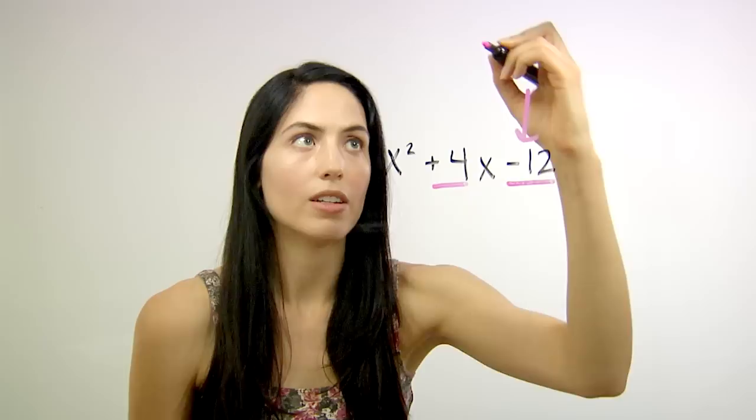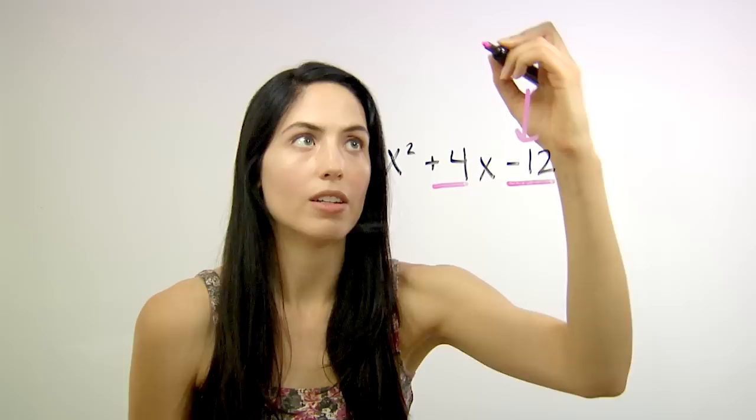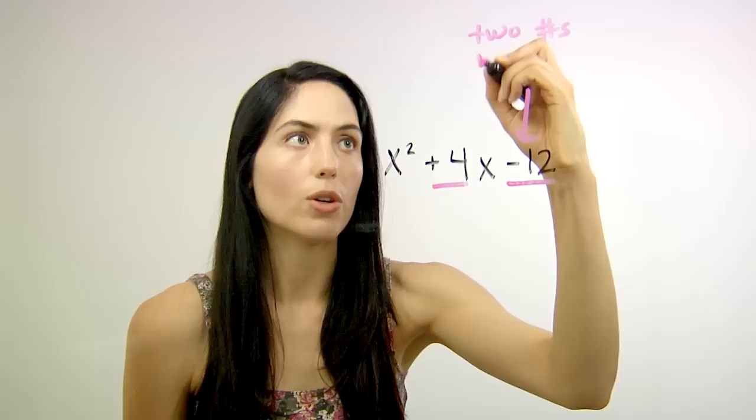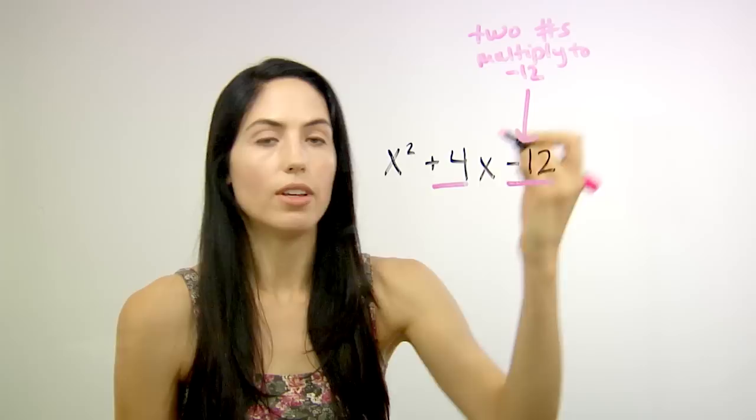So again, you need to find two numbers which multiply to negative 12 and which also add to positive 4.